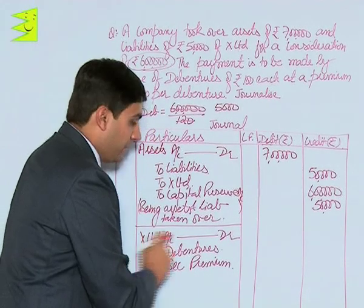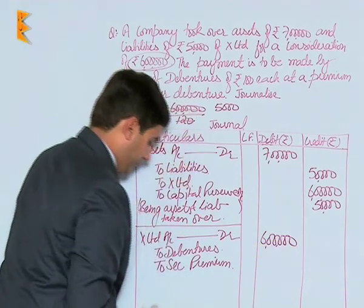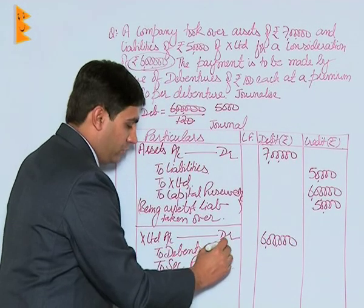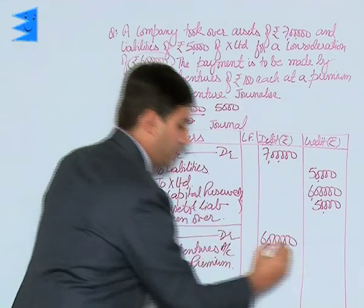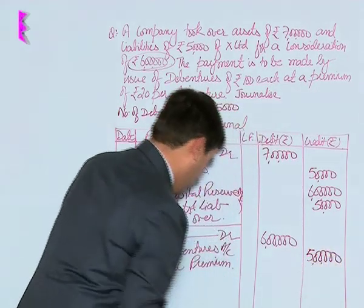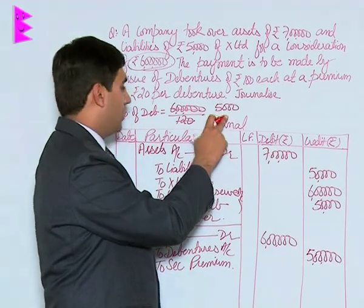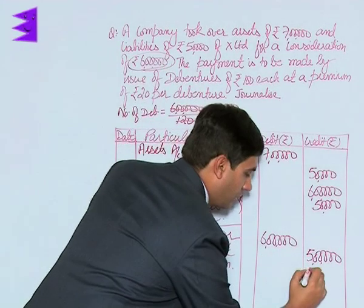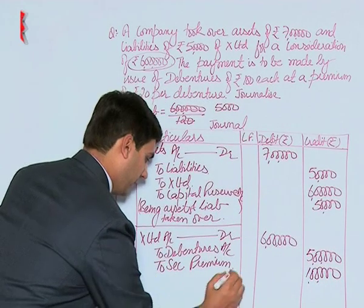Filling the amounts in the journal entry: X Limited will receive payment of 6 lakh. Debentures will always show the face value, that means 5000 debentures into rupees 100, which comes to 5 lakhs. Securities premium would be equal to 5000 debentures into rupees 20 premium, that is 1 lakh. In the narration we will write being debentures issued to X Limited.